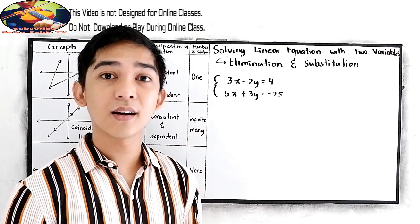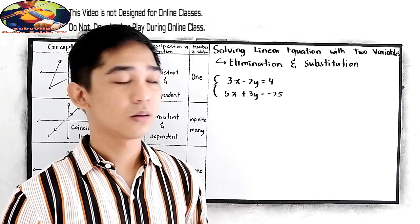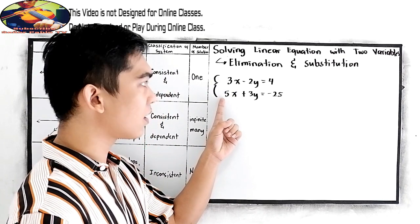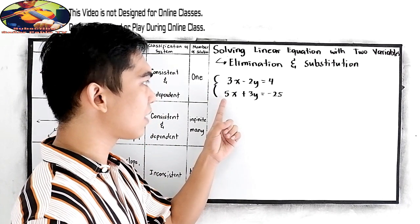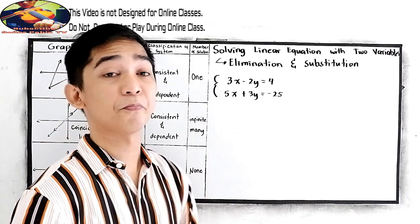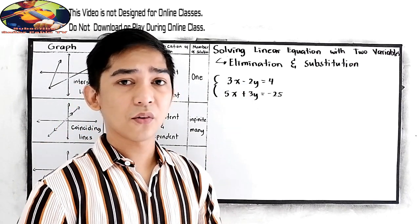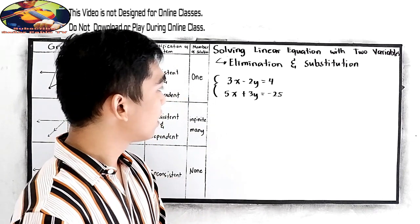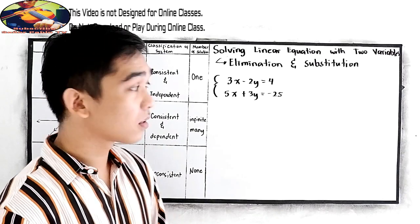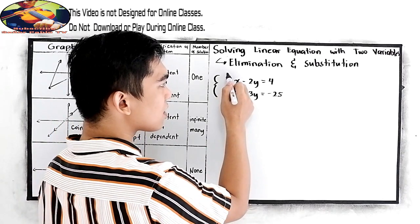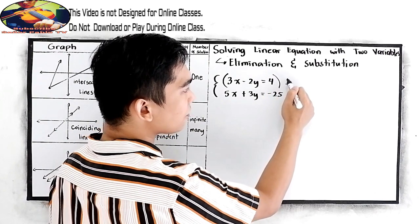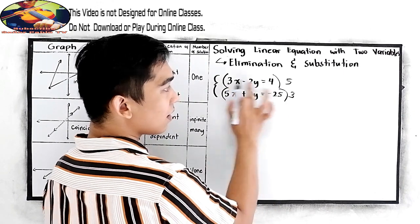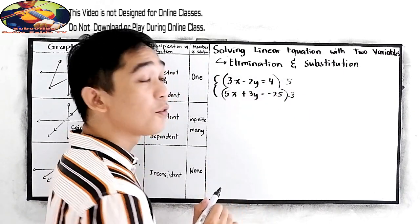Study the given equations. So if we're going to use the elimination method and want to cancel x, we need to multiply this by 5, and this by 3, so that the coefficient for x will be 15.